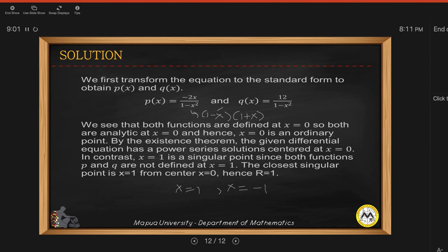So we see that both functions are defined at x equals 0. So meaning x equals 0 is an ordinary point. Because p and q are both defined at x equals 0.